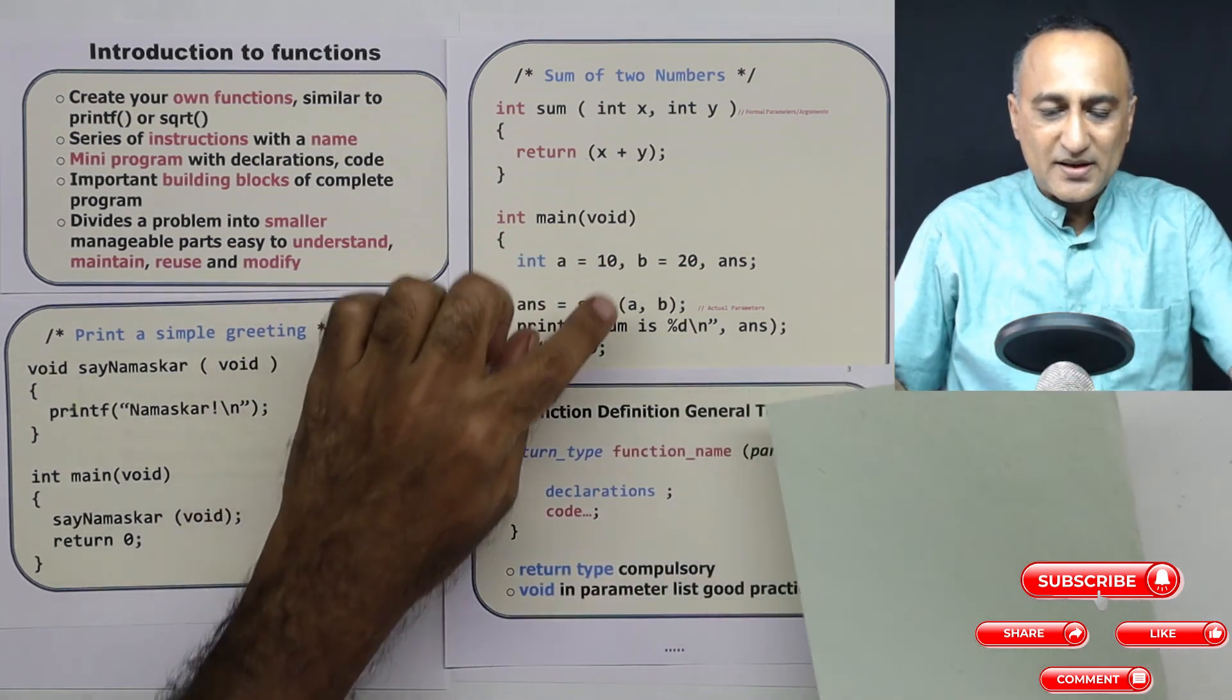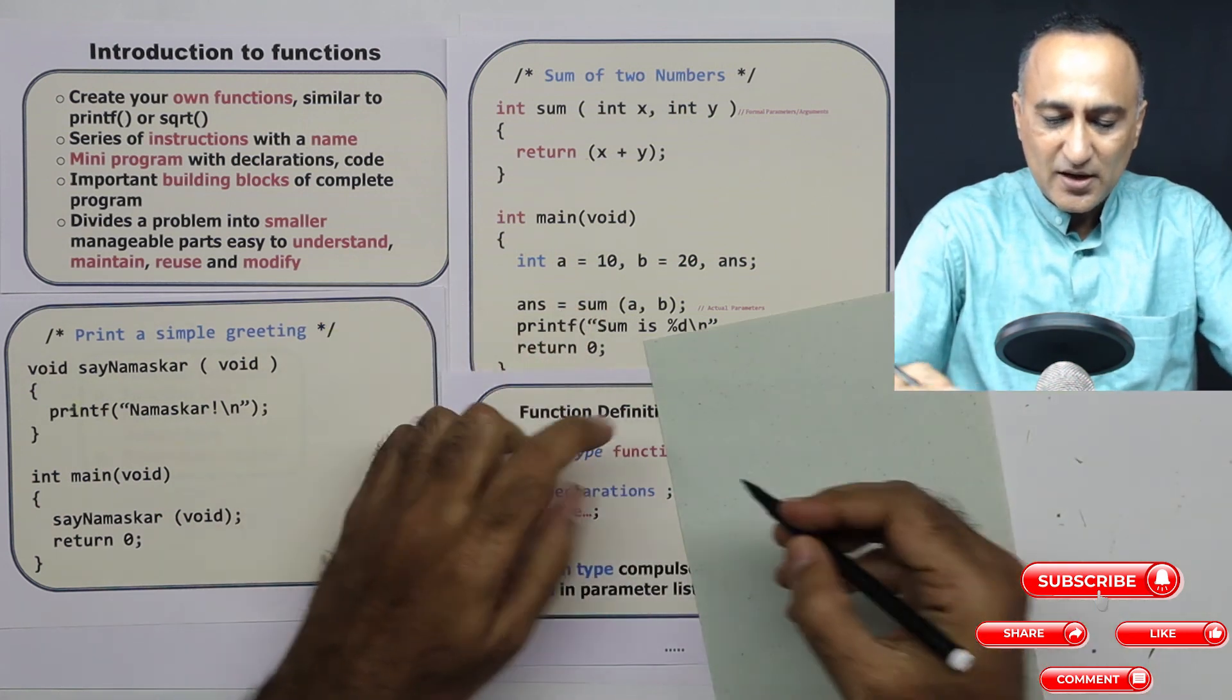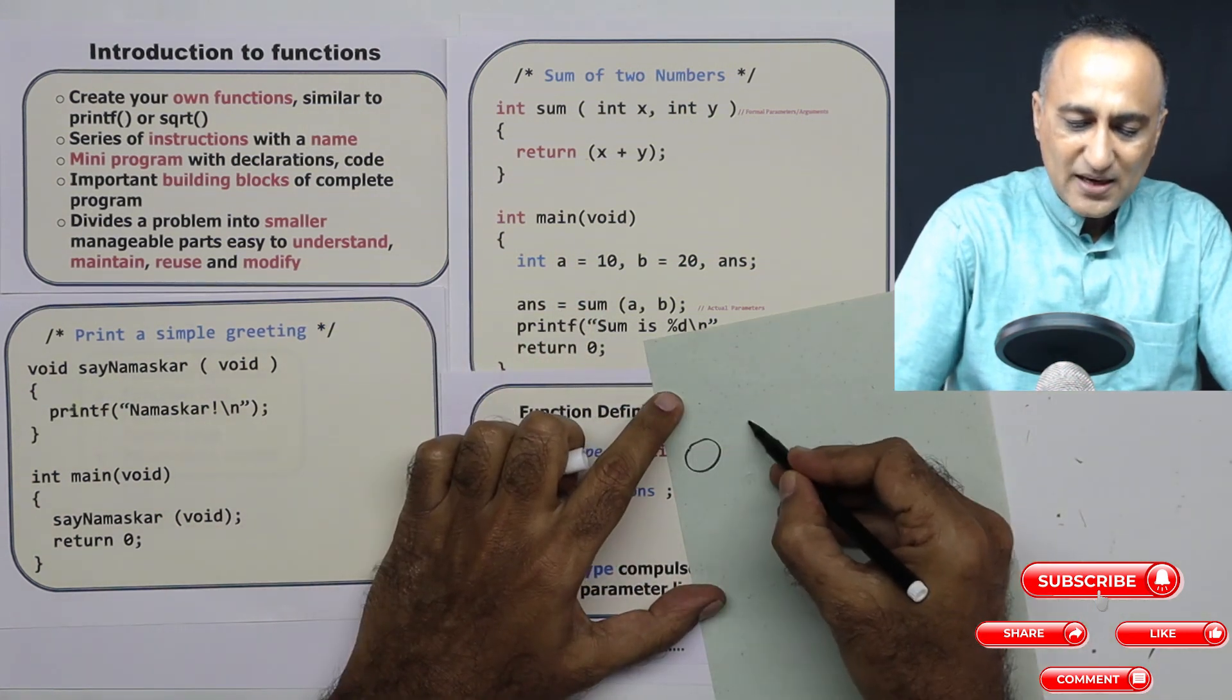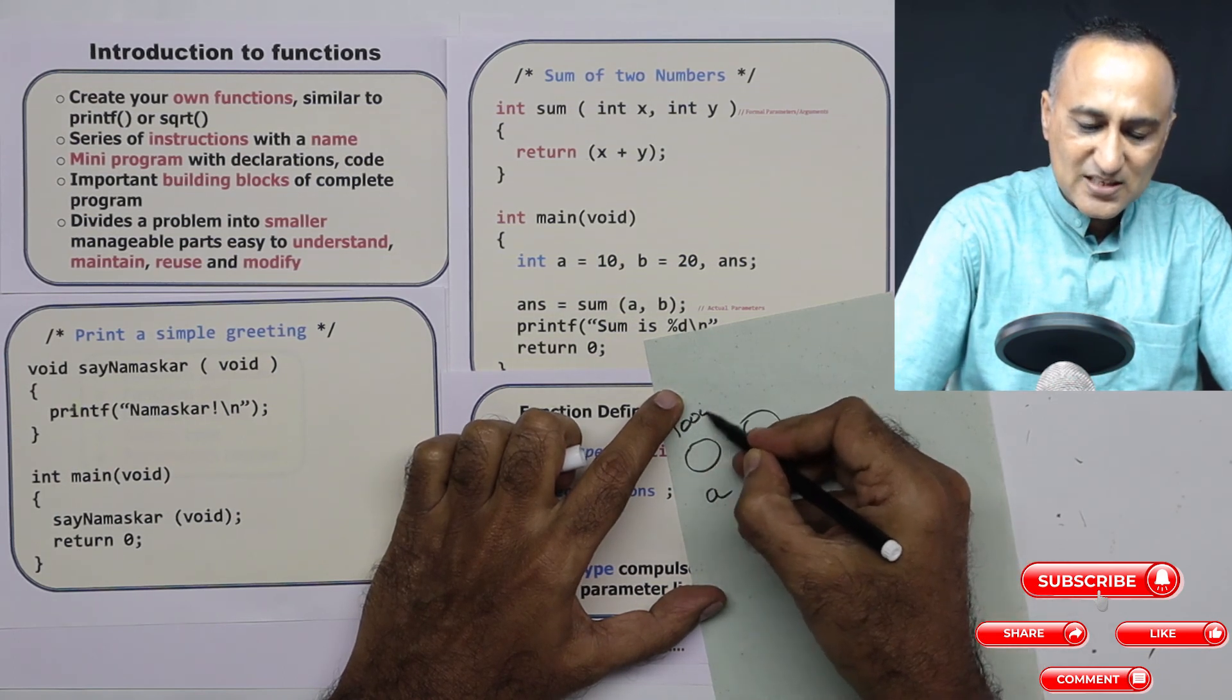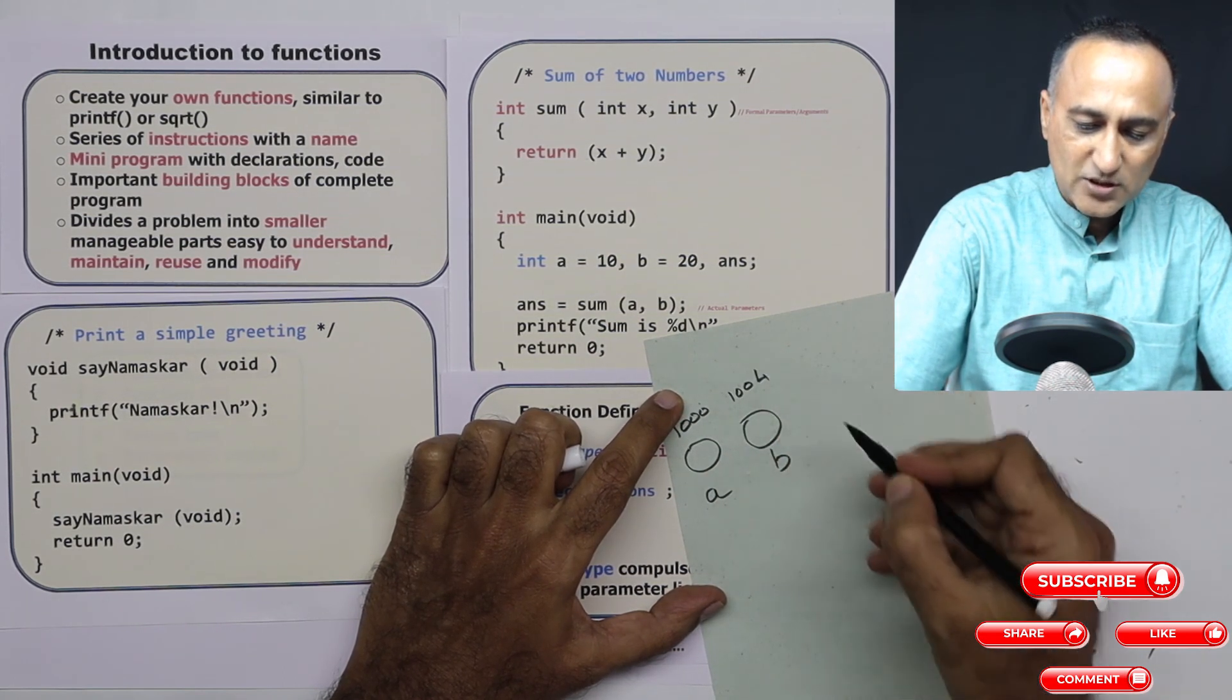So just to help you understand this a b and x y, you can think of a b as one location. This is a, this is b. Think of this as a thousand location, this as one thousand four.